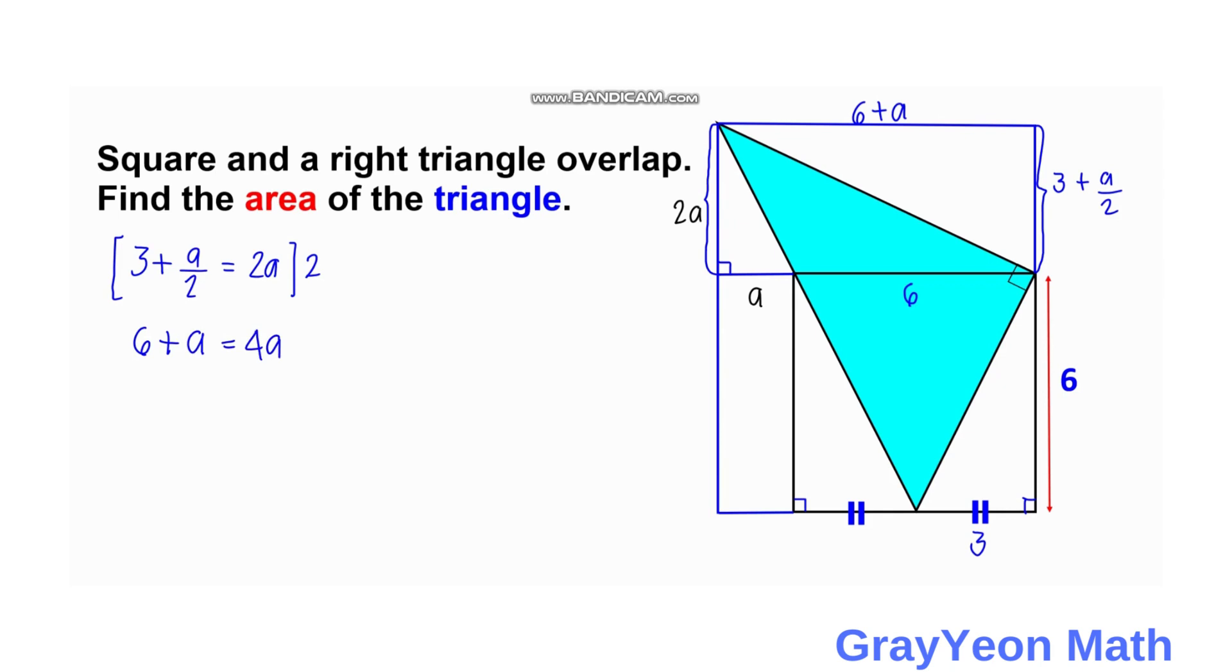So we have 4A minus A is equal to 3A is equal to 6. So 3A being equal to 6, we divide both sides by 3. Then we have A is equal to 2.